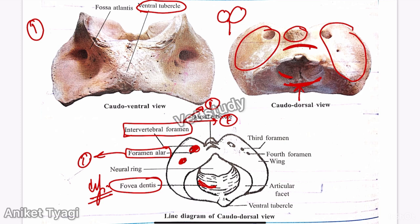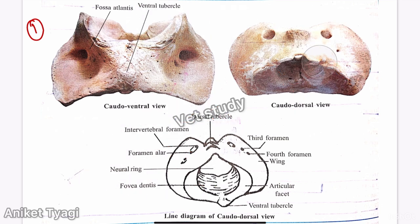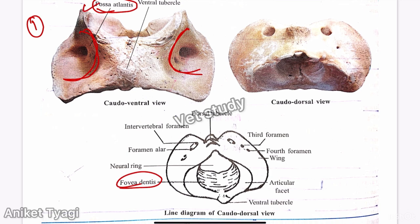The cranial part of the atlas is highly concave to accommodate the occipital condyle of the skull. The ventral surface of each wing is also concave and is termed fovea atlantis. Important terms to remember include fovea atlantis, fovea dentis, foramen alar, and intervertebral foramen.